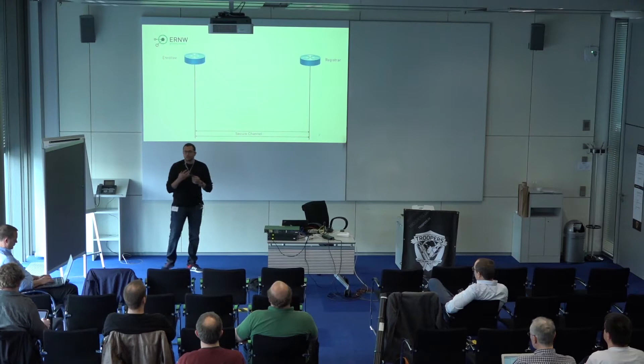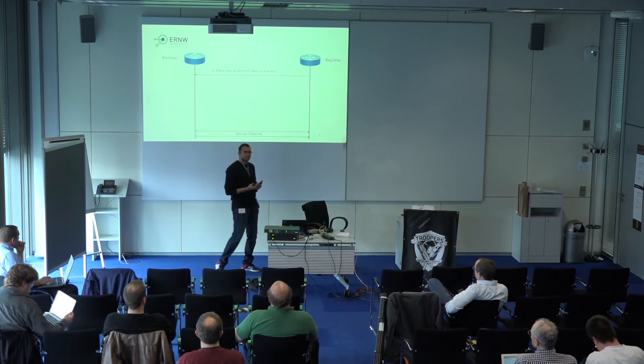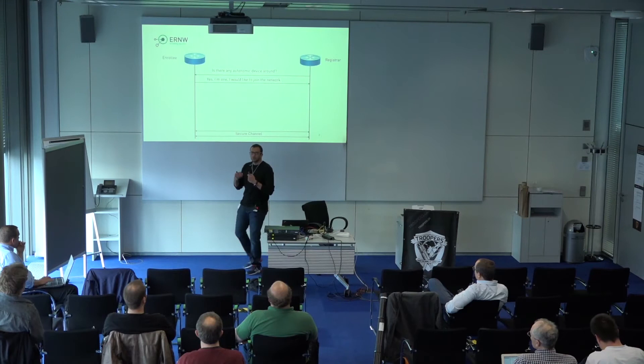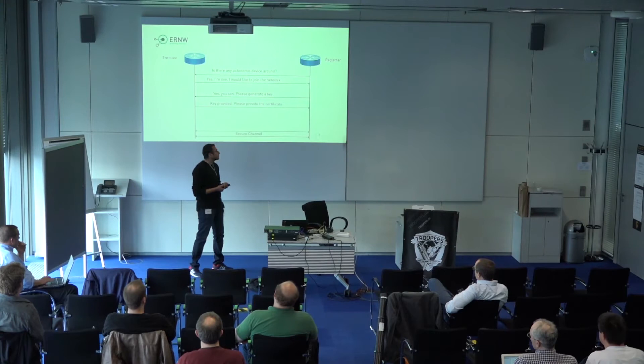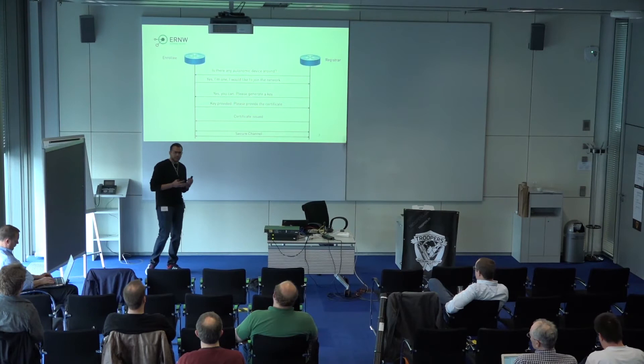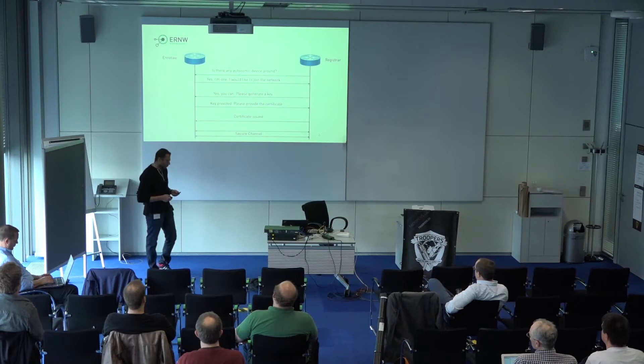For a microscopic overview of how communication works: the registrar sends an update once configured, saying it's searching for any autonomic device around. Once an autonomic device hears this, it asks to join the domain. The registrar asks it to generate a key so it can issue a certificate. Once that's done, the enrollee replies with the key. After that, a secure channel is started. Everything in the Autonomic Network is totally secure, totally encrypted, totally authenticated. You just need a few messages in the beginning to create such a channel.